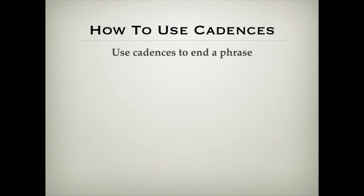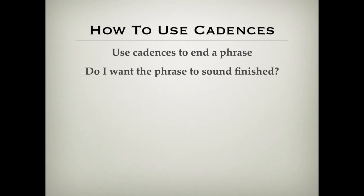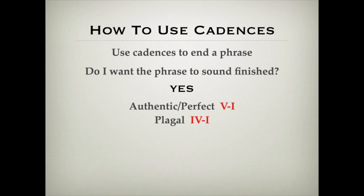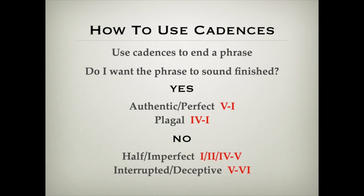So how do we use cadences? We use cadences to end a phrase in our music compositions, and we need to ask: do I want the phrase that I'm writing to sound finished or not? If the answer is yes, then we choose a finished cadence — you've got two options: the perfect/authentic, or the plagal. Usually you will use the perfect, V to I, but sometimes you may want that more gentle sound of the plagal. If the answer is no, then you choose either the imperfect or the interrupted. Typically you'll use the imperfect, but sometimes you might want to bring an element of surprise into your composition by using the interrupted cadence, going from chord V to chord VI.